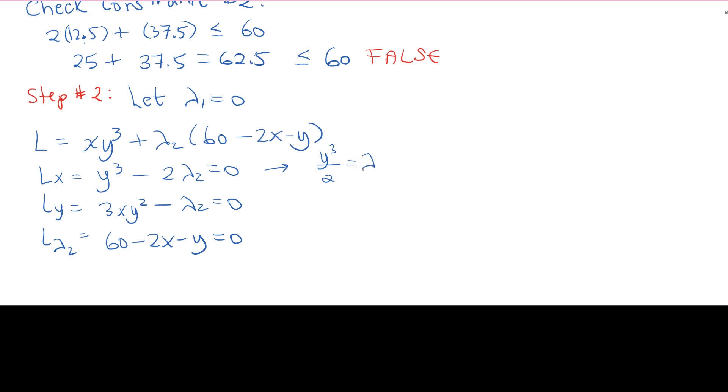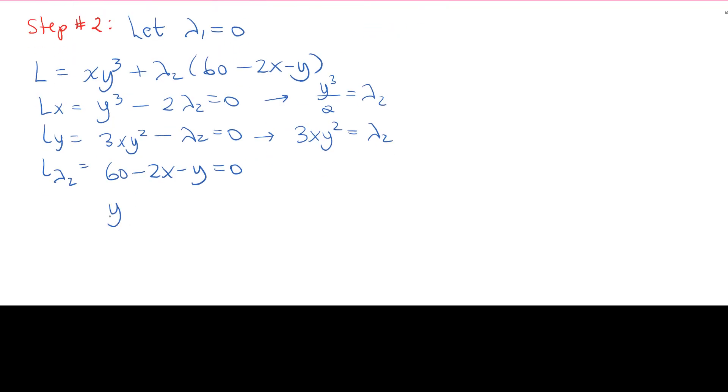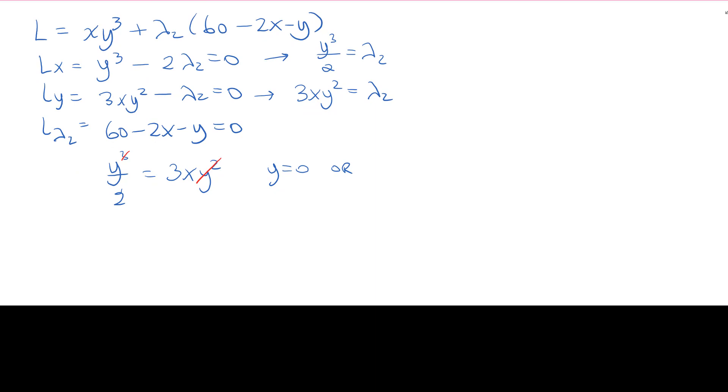Y cubed over 2 is lambda 2 for the first one. 3xy squared is lambda 2 for the second one. And that gives y cubed over 2 equals to 3xy squared, since they're both equal to lambda 2. Cancel out the power of y, so either y equals to 0, or the following is true. Y equals to 2 times 3x, which gives 6x.